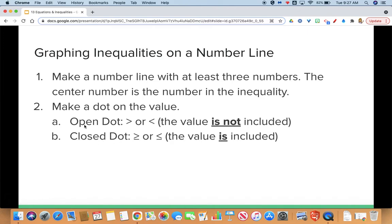We use a closed dot if we have the greater than or equal to or less than or equal to. This is because the value could be included as a possible answer to the solution so we want to shade it in to show that that could be an answer to our solution. Once we have our number line with our dot, then we shade the number line to show all possible solutions for that inequality.